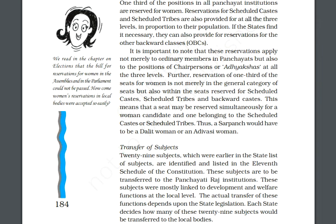Next, write a note on the transfer of subjects. Mainly 29 subjects, which were earlier in the state list, were listed in the 11th schedule of the Indian constitution. These 29 subjects were transferred to the Panchayati Raj institutions and are related to development and welfare functions at the local level. However, the actual transfer of these subjects and functions depends upon the state legislation. Each state decides how many of these 29 subjects would be transferred to the local bodies.